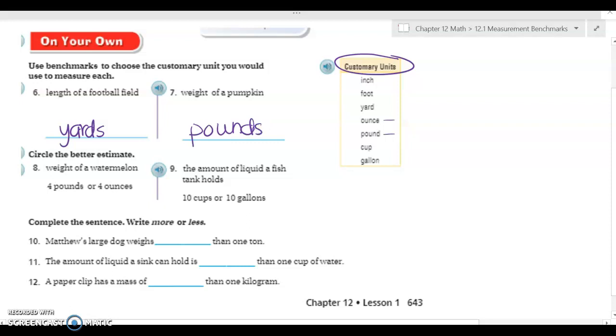Okay, eight and nine, circle the better estimate. The weight of a watermelon, four pounds or four ounces? Think about pencils and bread again. It's definitely going to be more than four ounces for a watermelon, so it's probably a four pound watermelon. Number nine, the amount of liquid a fish tank holds, ten cups or ten gallons? Well I know that one gallon of milk is in those jugs, and fish tanks hold quite a lot because it's a tank, not a bowl. So I'm going to say it's ten gallons.